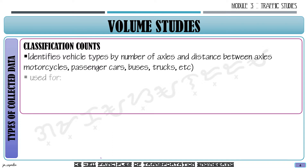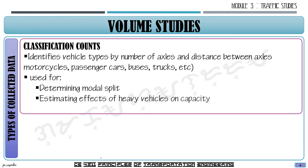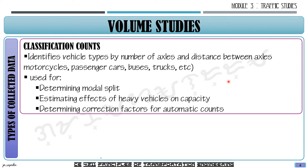Classification counts are used for the following purposes: to determine the modal split used in design or models of a road section; to estimate the effects of heavy vehicles on capacity; and to determine correction factors for automatic counts. Modal split — how many people use a certain vehicle for a certain route — will be discussed further during finals. For classification counts, we use it for your modal split.